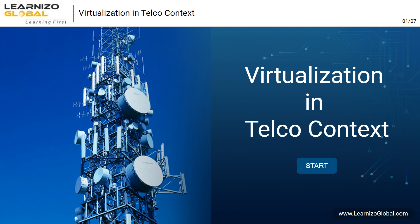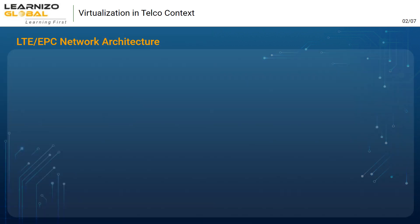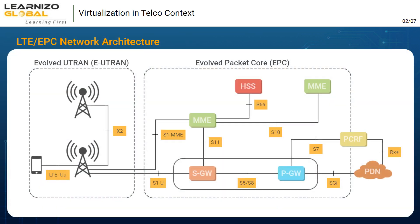In 4G networks, we only have packet switching. At the same time, Node B and RNC functionality are combined in 4G, and the new node is called eNodeB.